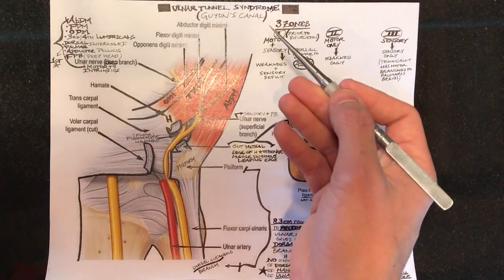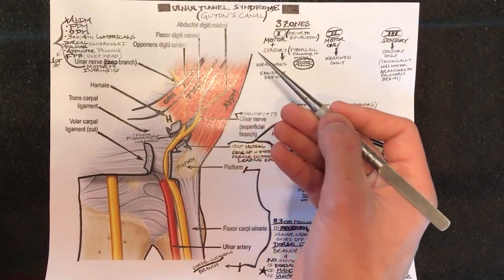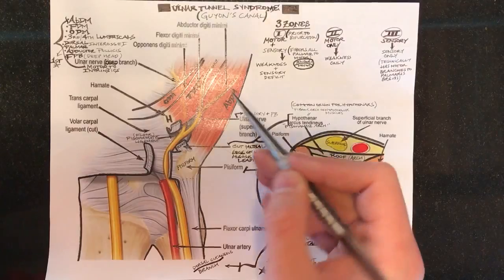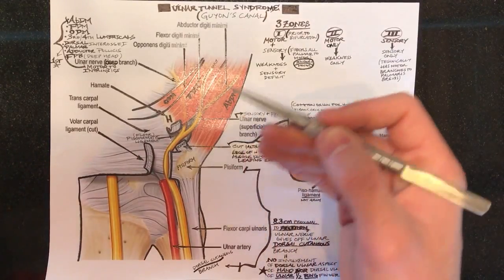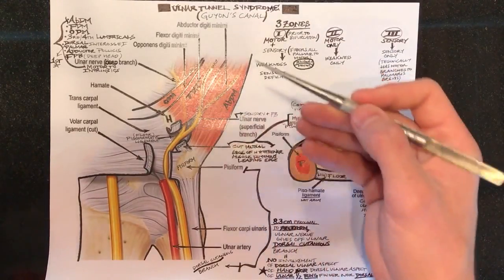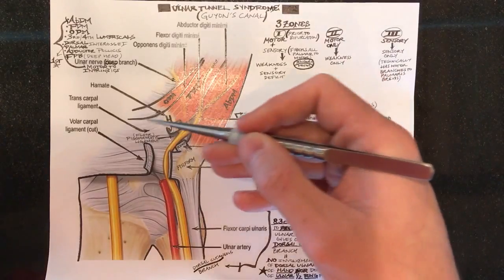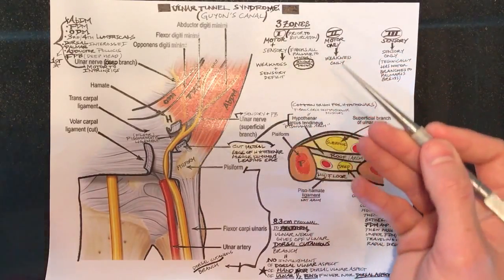Guyon's Canal is the initial guy that described this anatomic nerve compression. Let's talk about the anatomy because understanding anatomy is fundamental to understanding the nerve compression and the physical exam findings and signs or symptoms the patient will be reporting or showing.